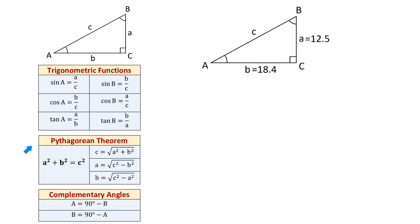Below, we also have the Pythagorean theorem: the sum of the squares of the legs equals the square of the hypotenuse. Using this theorem, we can find side C, side A, or side B. C equals the square root of A squared plus B squared. A equals the square root of C squared minus B squared. And B equals the square root of C squared minus A squared.